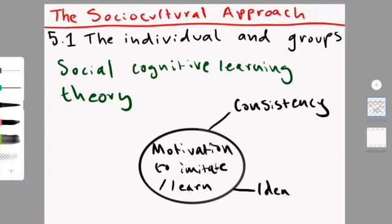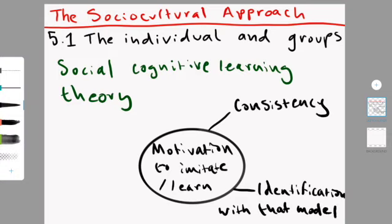The next one is identifying with the model. So basically, if the model has something that is alike you, for instance, a lot of the time it happens with gender. So if you see, I'm a girl, so if you see a woman doing something, I might feel tempted to do that too because I relate and I'm like, oh, that's how I should behave, I guess.